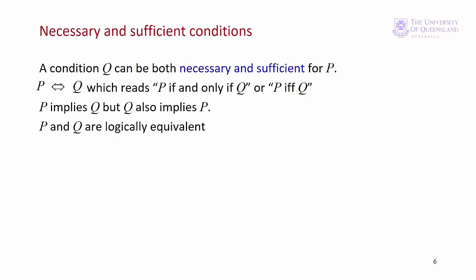We can also have the case where Q can be both a necessary and sufficient condition for P. This is where the equivalence arrow comes in. We can interpret the equivalence arrow now as P if and only if Q. And that's commonly written as IFF. P implies Q, but Q also implies P. So P and Q are logically equivalent.